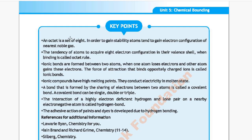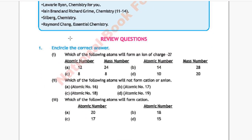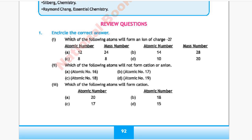Next chapter is Chemical Bonding. Question 1: Which of the following atoms will form an ion of charge minus 2? Option A: atomic number 12, mass number 24; Option B: atomic number 14, mass number 28; Option C: atomic number 8, mass number 8; Option D: atomic number 10, mass number 20. The correct answer is Option C — an atom with atomic number 8 forms an ion of charge minus 2.